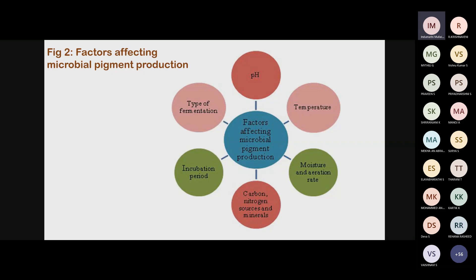Another key factor is incubation period. Every bacteria, fungi, yeast, or algae has a different incubation period for growth and pigment production. For example, Serratia takes up to 72 hours, Chromobacterium gives pigment in 16 hours, Monascus takes 3 to 4 days, and fungi and yeast require a minimum of 15 days. Providing proper nutritional sources and managing incubation period are very important factors in developing microbial pigments.